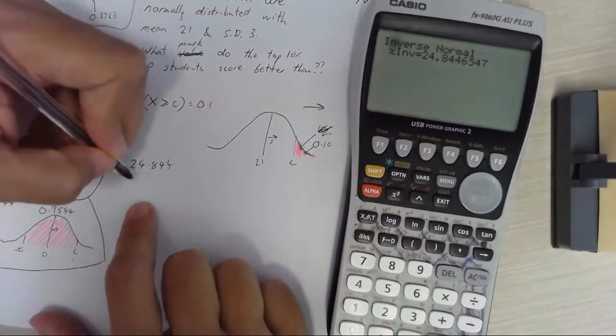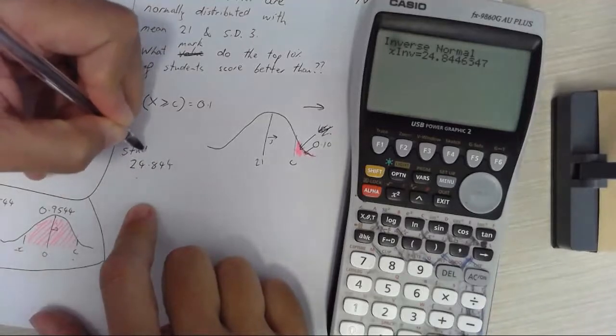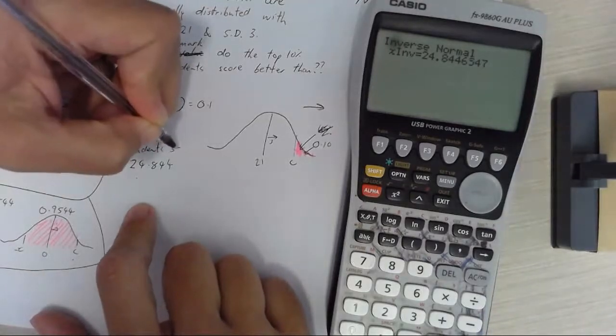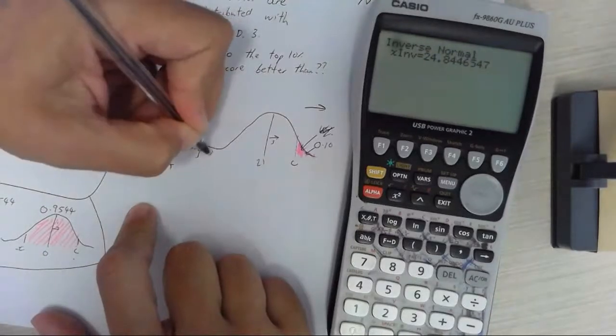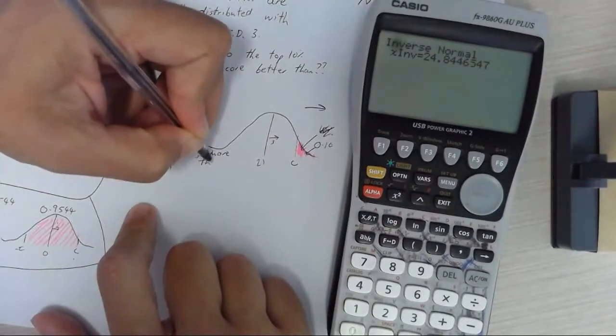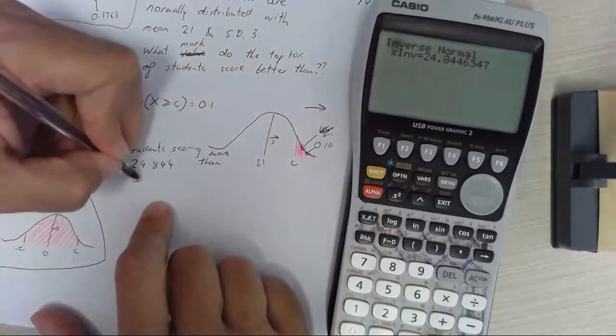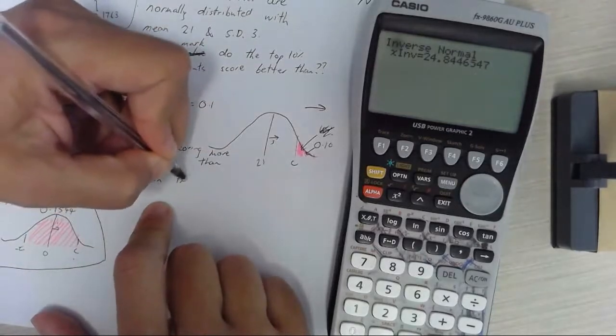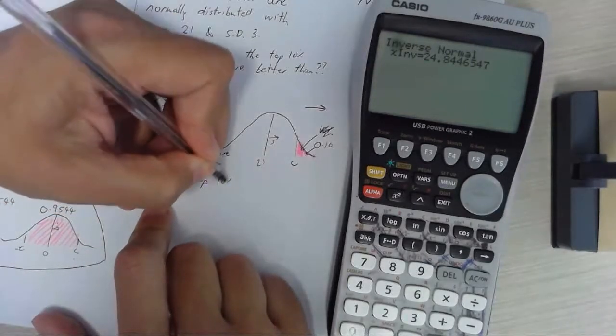Okay they need to score more than 24.844. So students scoring more than 24.844 are in the top 10 percent.